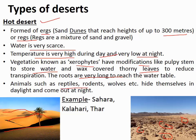Animals such as reptiles — huge reptile species, lots of lizards and snakes — are found in the desert ecosystem, along with rodents and wolves. They hide during the daytime because temperatures rise to around 50 degrees centigrade. They are active at night, so they are called nocturnal animals. Examples of hot deserts include the Sahara, Kalahari, and the Thar in India.